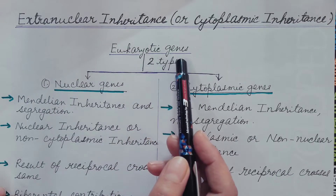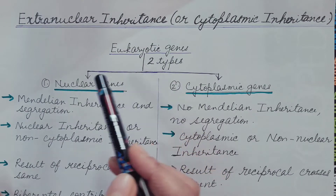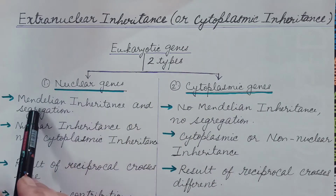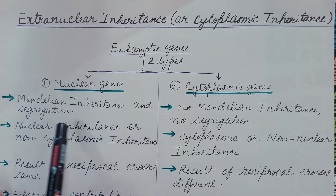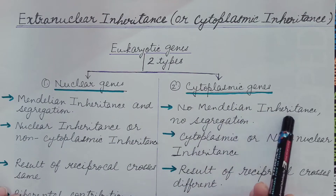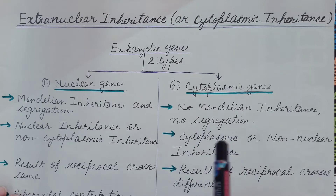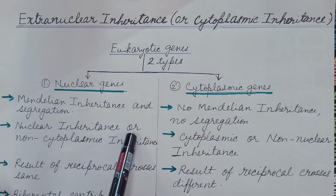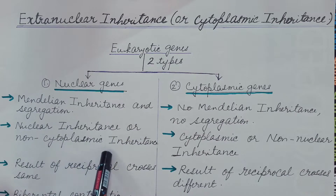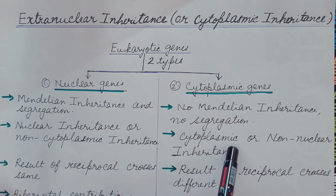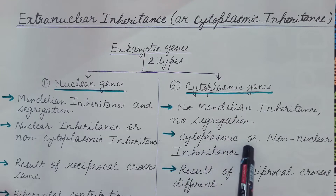Eukaryotic genes are of two types: nuclear genes and cytoplasmic genes. Nuclear genes show the Mendelian pattern of inheritance and segregation, while cytoplasmic genes do not show the Mendelian pattern of inheritance and segregation. Inheritance of nuclear genes is known as nuclear inheritance or non-cytoplasmic inheritance, but inheritance of cytoplasmic genes is known as cytoplasmic or non-nuclear inheritance.